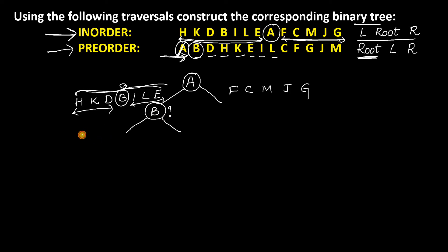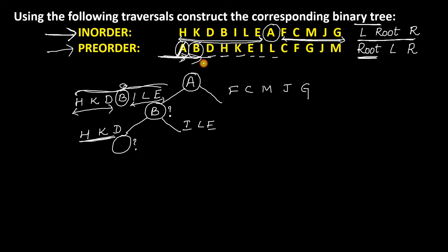Among H, K, and D, check which comes first in the preorder. D is coming first. So D is the root of this subtree, and H and K go to the left. Observe that after D in the inorder there are no nodes, so there will be no right child for D.